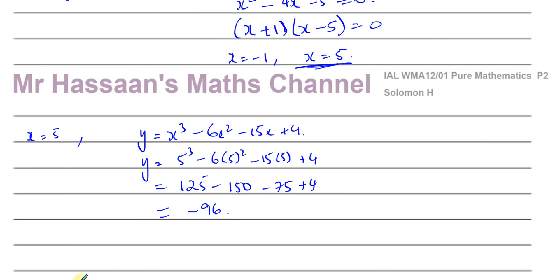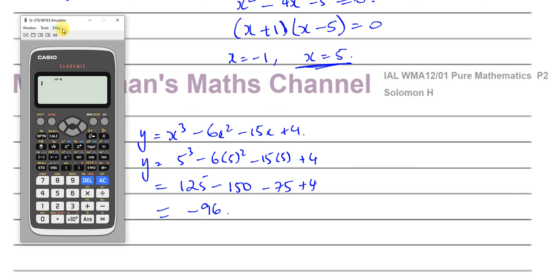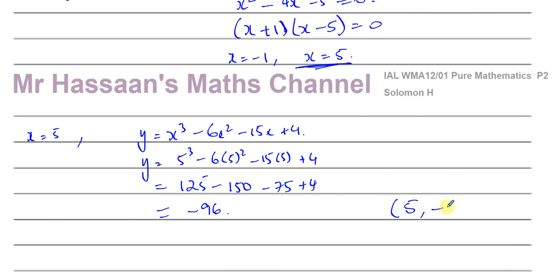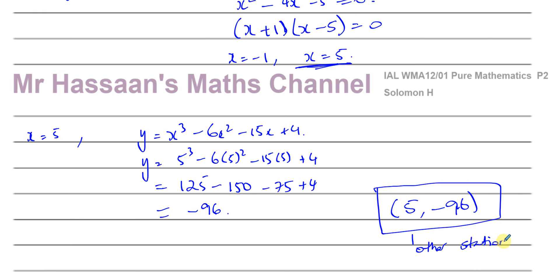Let me just make sure I didn't make a silly mistake there. Substituting those values in: 5 cubed minus 6 times 5 squared minus 15 times 5 plus 4 gives minus 96. Yes. So the coordinates of the other stationary point are 5 and minus 96. This is the other stationary point, and there we have the answer to this question.